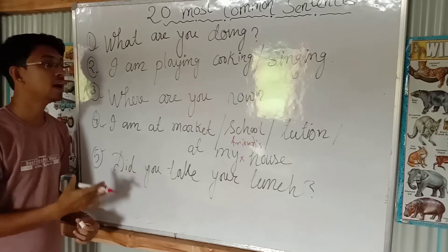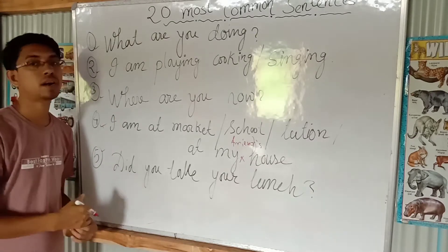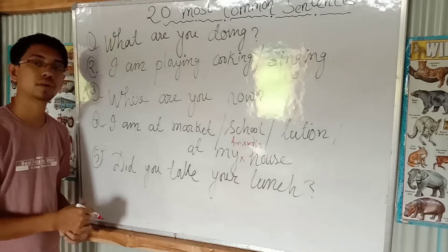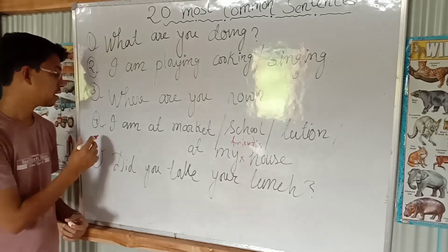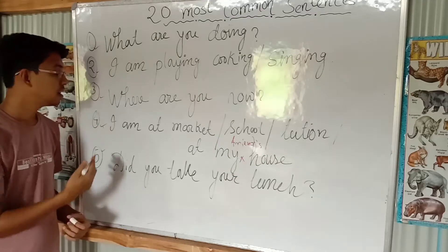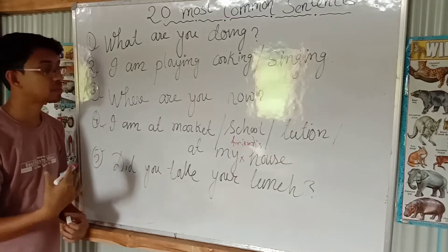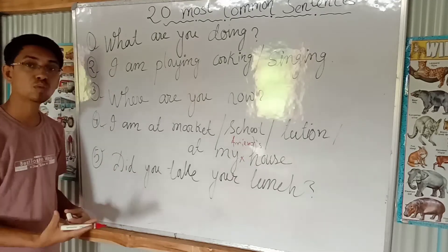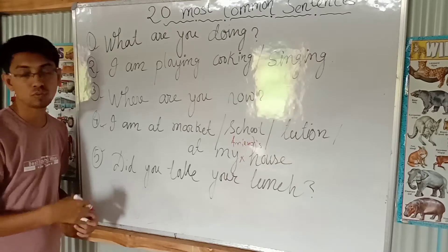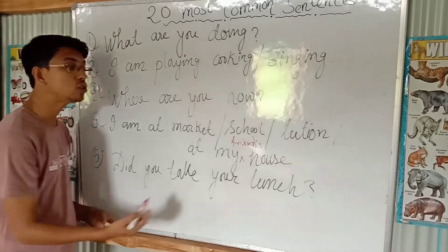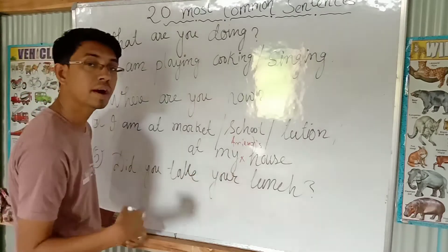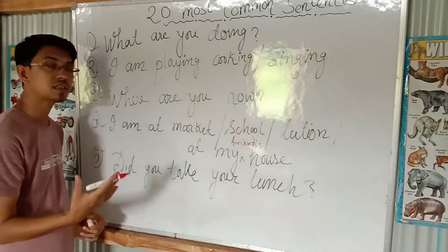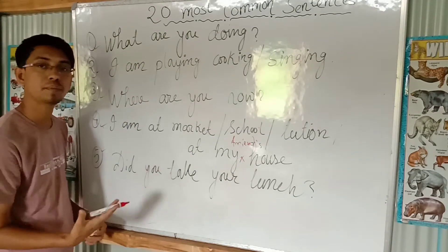Next sentence: Where are you right now? Where are you? What can you say? I am at the market. I am at school. I am at my tuition. I am at my friend's house.